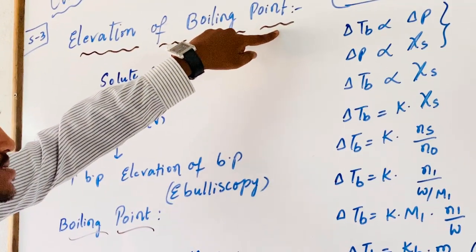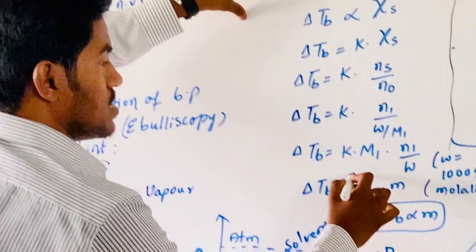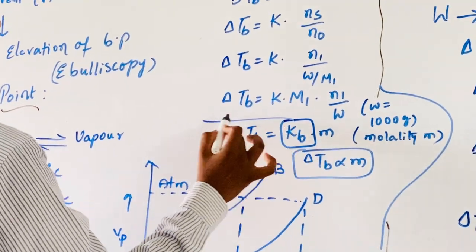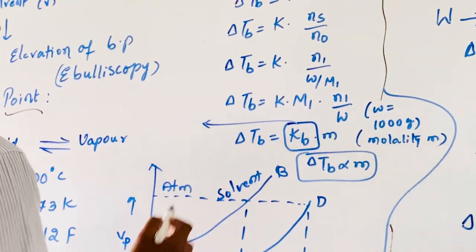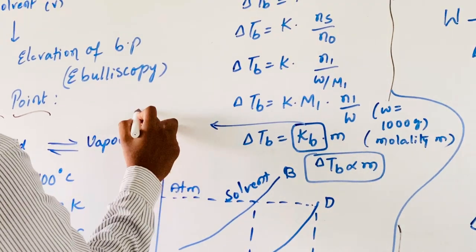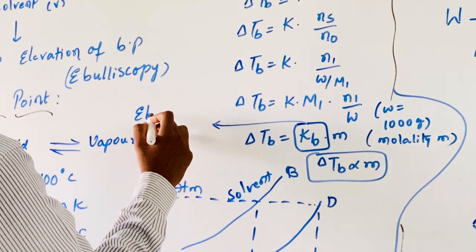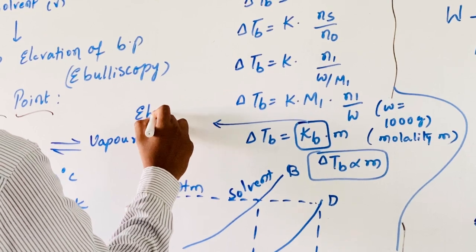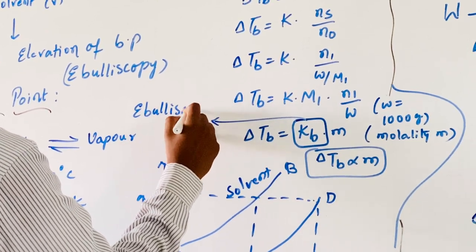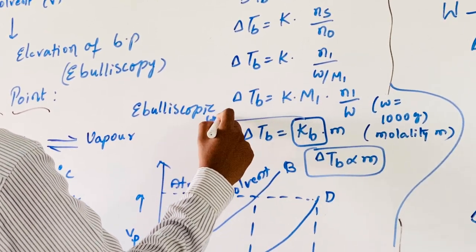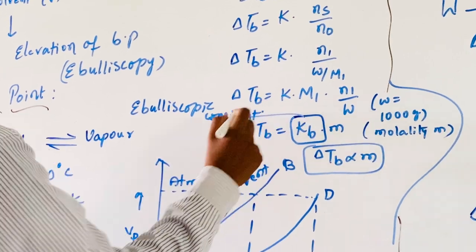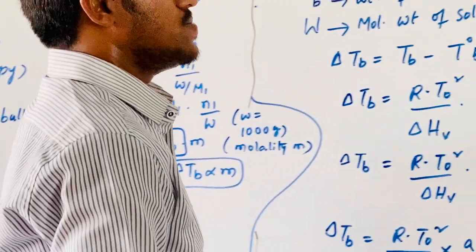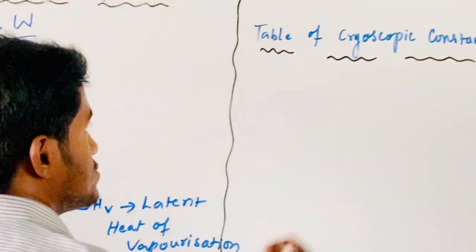Kb represents the ebullioscopic constant, also referred to as the ebullioscopy constant or molal elevation constant. Now coming to the table of volatile solvents and their Kb values.